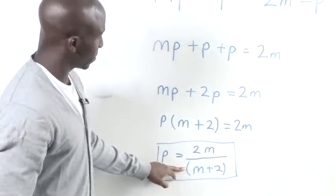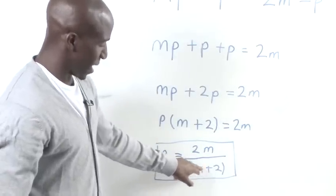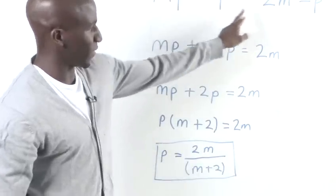From this, we see that we've got P equals 2M divided by M plus 2. Now, that's the simplification of this. And that's how to simplify equations.